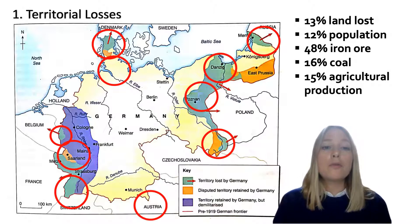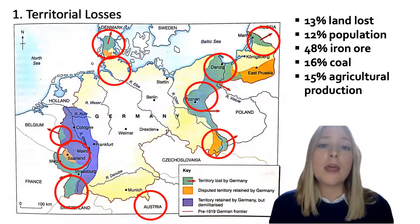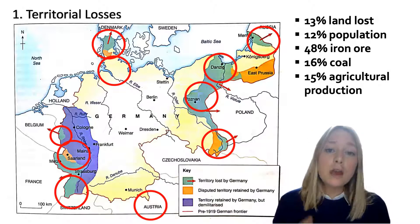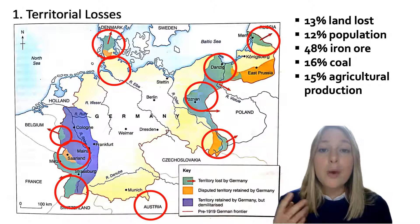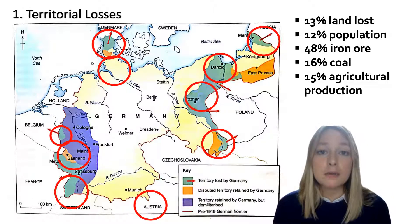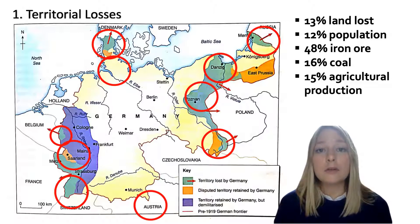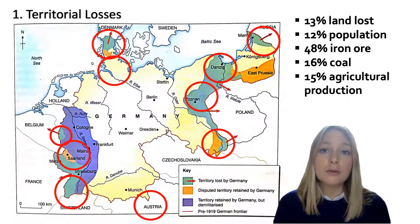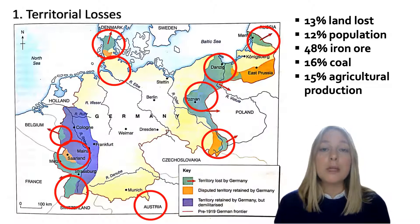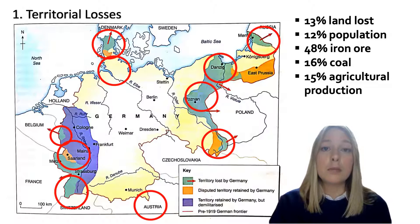Overall, Germany lost 13% of its territory, 12% of its population — equivalent to 6.5 million people — 48% of its iron ore, 16% of its coal, and 15% of its agricultural production. That is a significant proportion of the country's resources, now taken by the Allies.